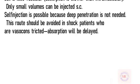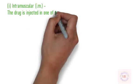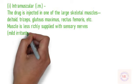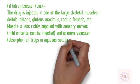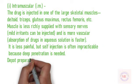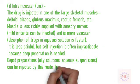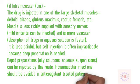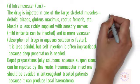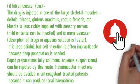(II) Intramuscular (IM): The drug is injected in one of the large skeletal muscles — deltoid, triceps, gluteus maximus, rectus femoris, etc. Muscle is less richly supplied with sensory nerves, mild irritants can be injected, and as it is more vascular, absorption of drugs in aqueous solution is faster. It is less painful, but self-injection is often impracticable because deep penetration is needed. Depot preparations, oily solutions, and aqueous suspensions can be injected by this route. Intramuscular injections should be avoided in anticoagulant-treated patients because it can produce local hematoma.